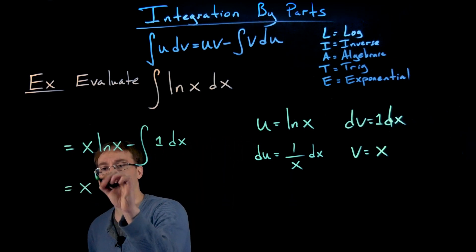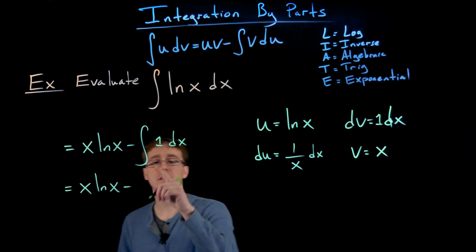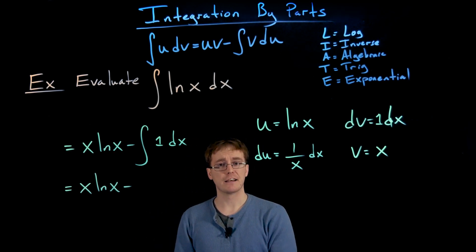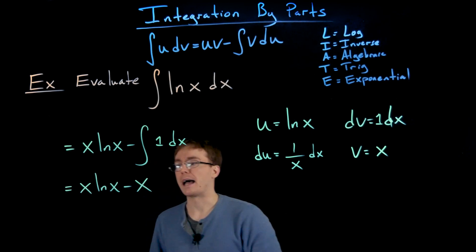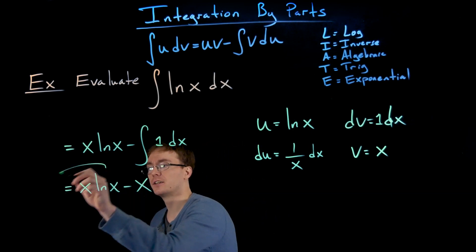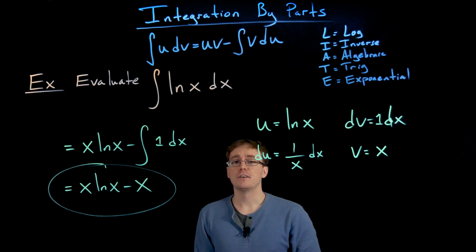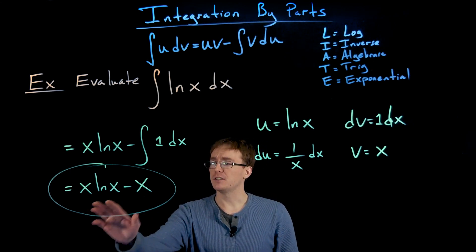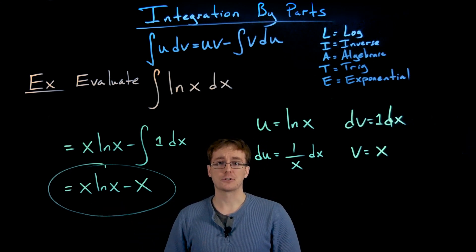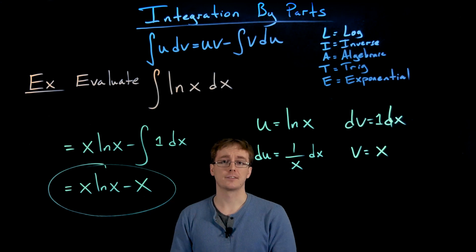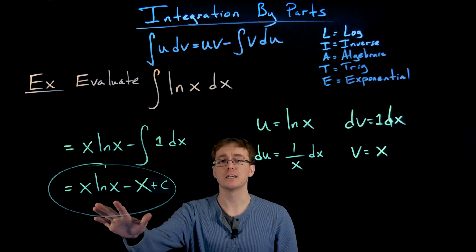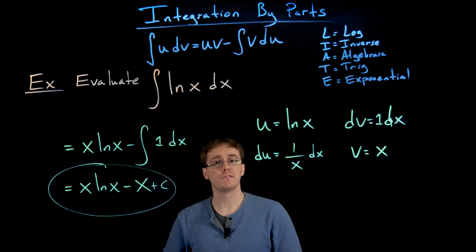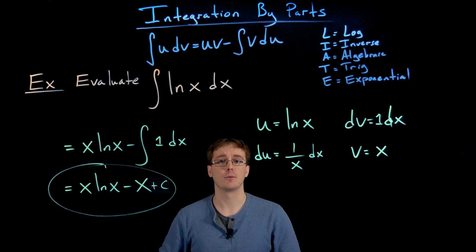To finish finding our antiderivative, we evaluate the integral of 1, which is just x. So our final answer is: the antiderivative of the natural log of x equals x times the natural log of x minus x, plus the constant of integration. We won't verify it here, but if we differentiate this we should end up with the natural log of x — and that is exactly what will happen.